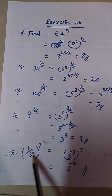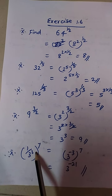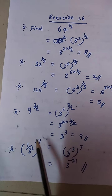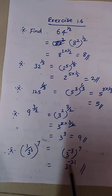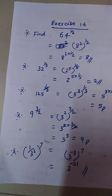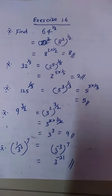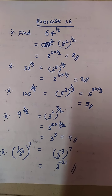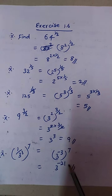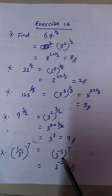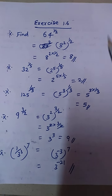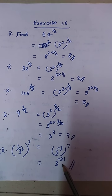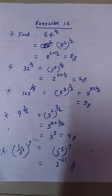So 1 by 3³ means 3 to the power minus 3, whole power 7. Therefore 3 to the power minus 21 is the answer. Thank you very much.